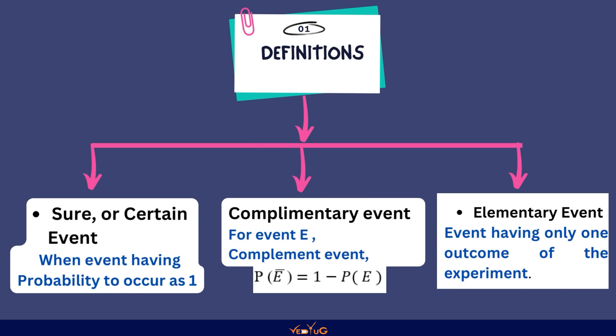Third definition है elementary event का. Event having only one outcome of the experiment is known as elementary event.